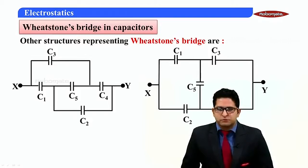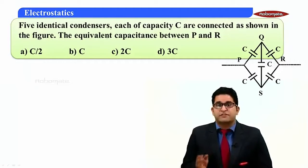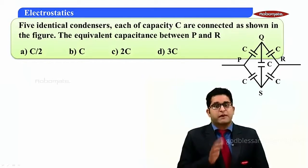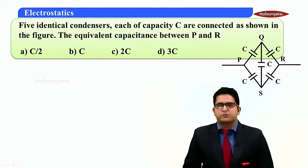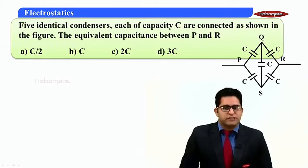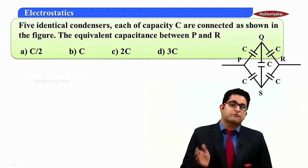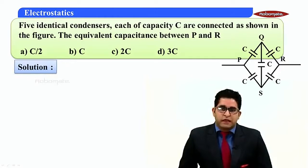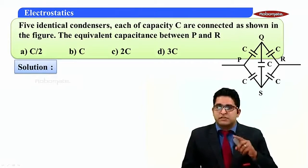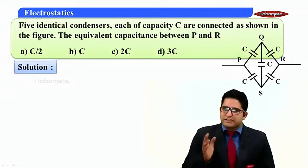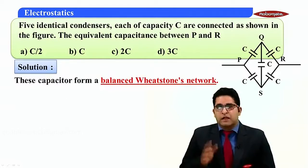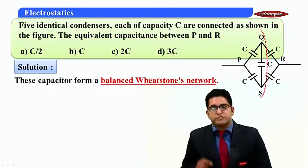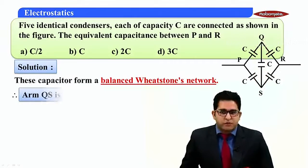MCQ: Five identical capacitors each of capacity C are connected as shown in the figure. The equivalent capacitance between points P and R is: (A) C/2, (B) C, (C) 2C, (D) 3C. Seeing the diagram carefully, C1 = C2 = C3 = C4 = C, so the bridge is balanced. Since the bridge is balanced, the capacitor connected between points Q and S is ineffective and can be removed.